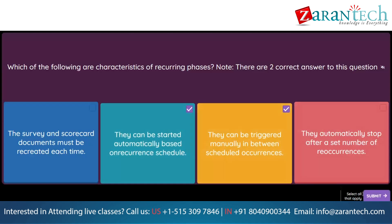Question. At the project template level, which access control is recommended by SAP Ariba Supplier Information and Performance Management? Option 1: Private to team members. Option 2: Owner only. Option 3: Private to supplier management/pro users. Option 4: Private to internal users.